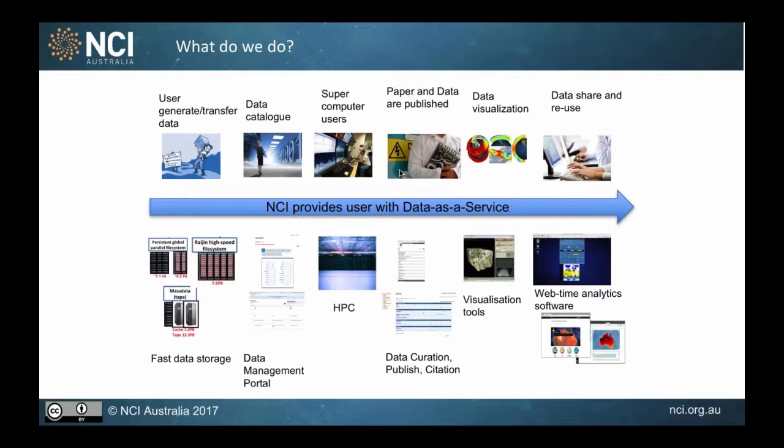What makes us different from other digital repositories is that we are co-located with an HPC — high performance computing — facility. Given the nature of our large-scale data, we host more than 10 petabytes of research data, and we really want to make good use of high performance computing here to advance scientific research.